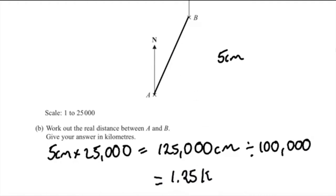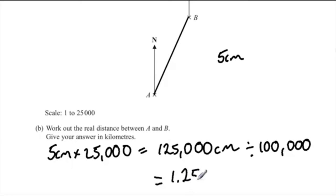Convert 125,000 centimetres into kilometres by dividing by 100,000, which equals 1.25 kilometres. That's our final answer.